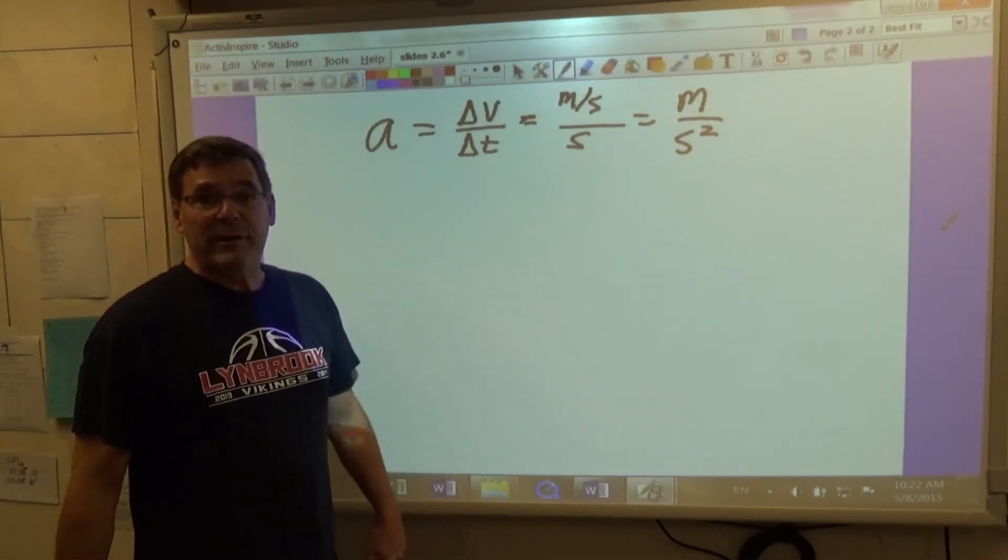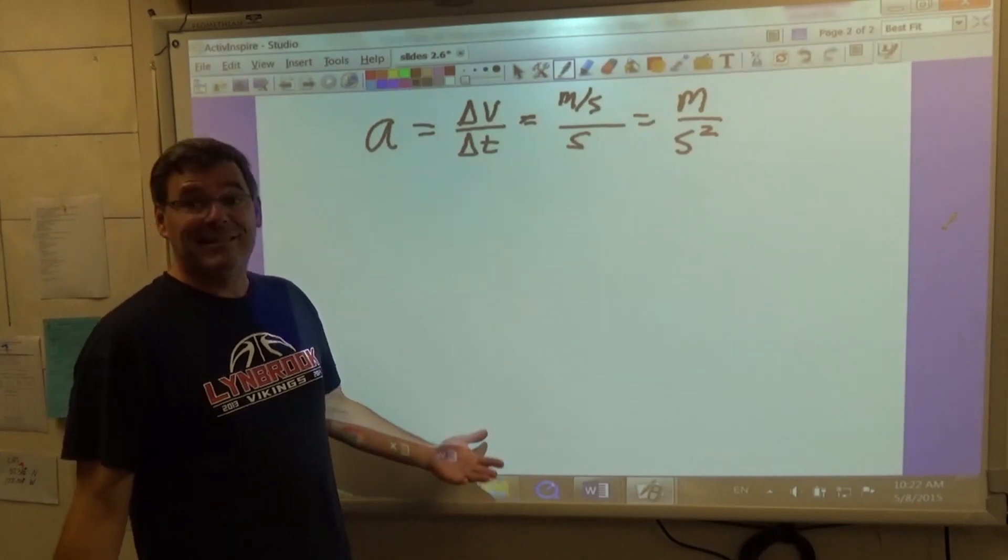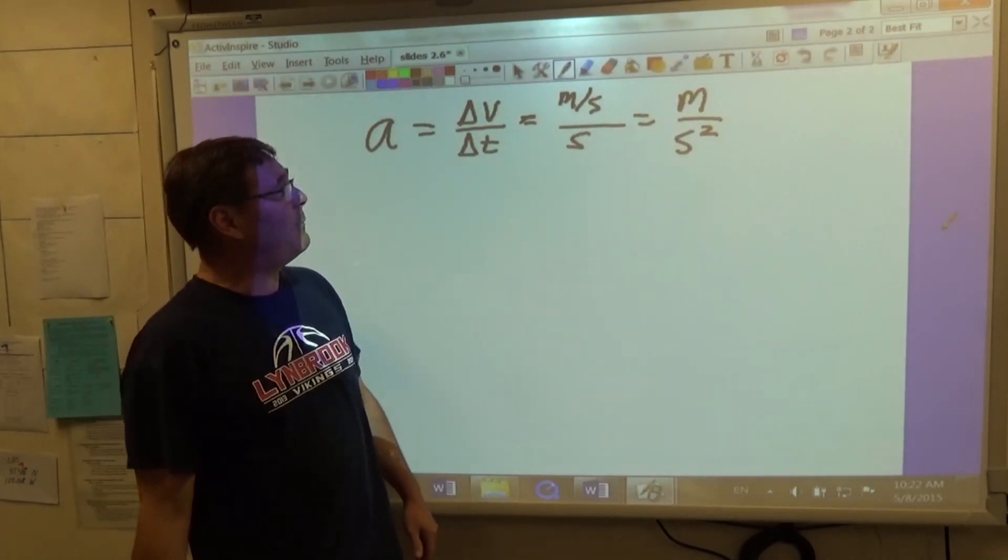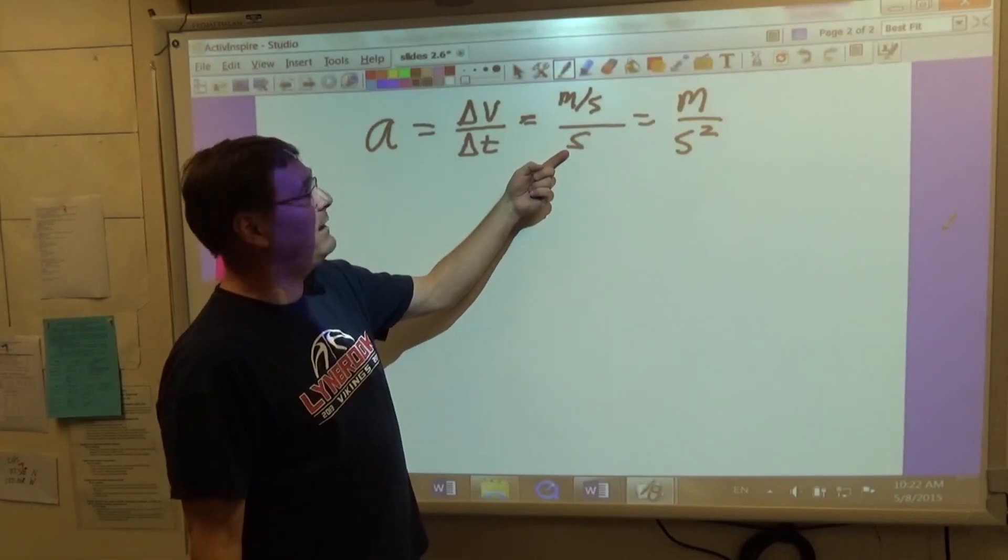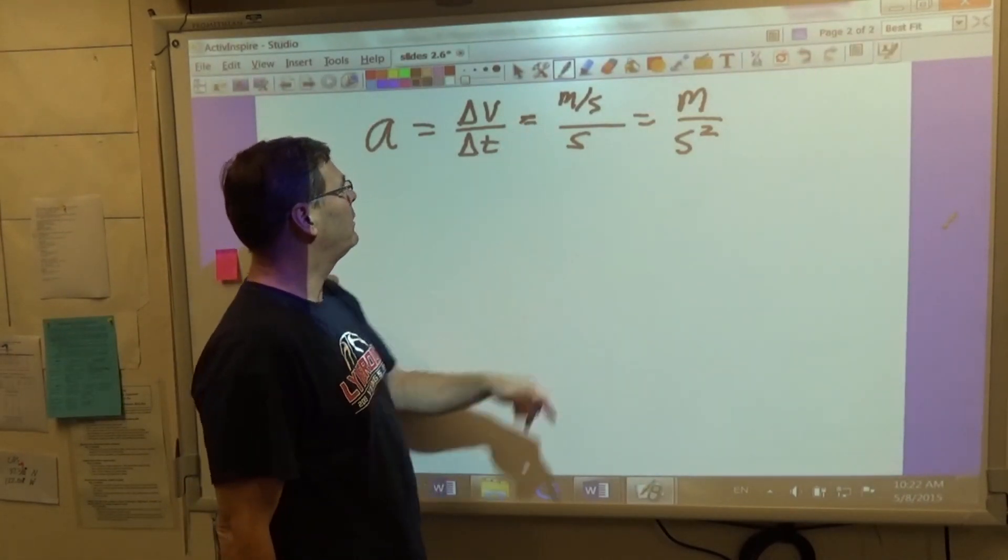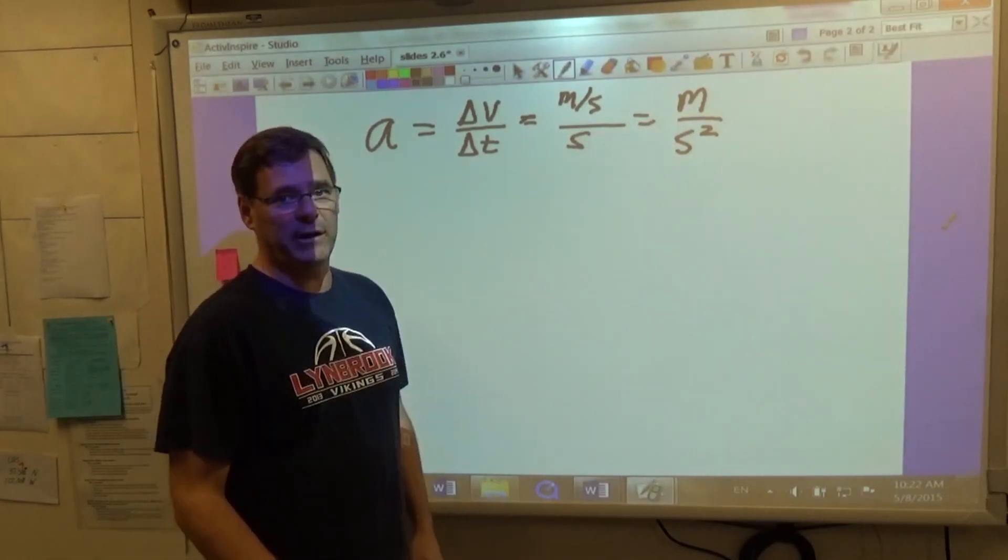When we talk about freely falling objects, the acceleration due to gravity is 9.8 meters per second squared. That means for every second that goes by, the velocity changes by 9.8 meters per second. But there's another unit we can also use.